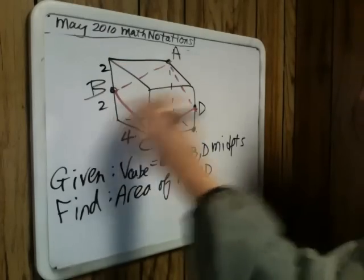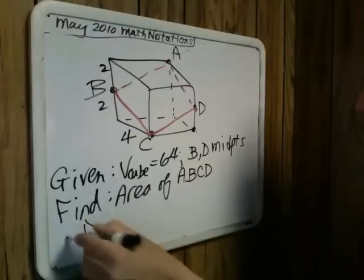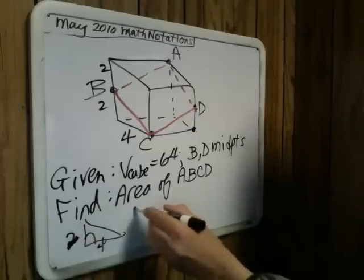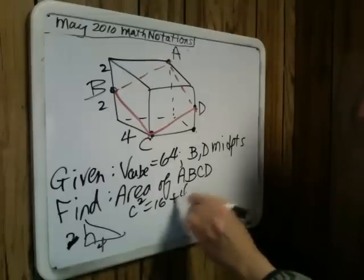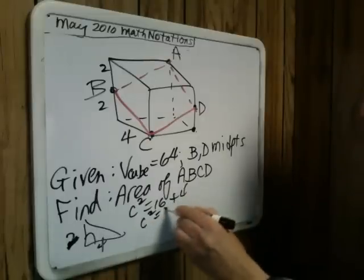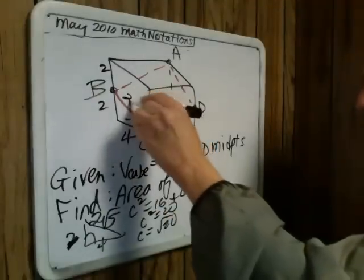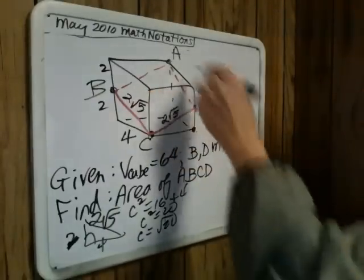And this will be two and two. So, by the Pythagorean theorem, this will be C squared equals 16 plus four. A squared plus B squared. I'm going to skip some steps. So, this is 2 radical 5. So, this is 2 radical 5. Similarly, this is 2 radical 5.